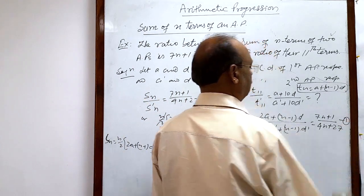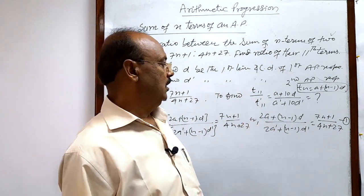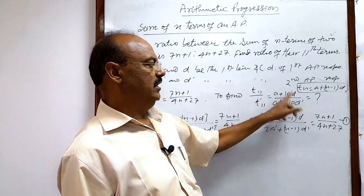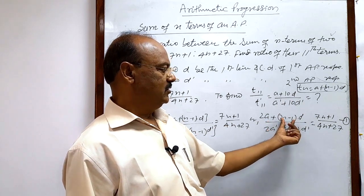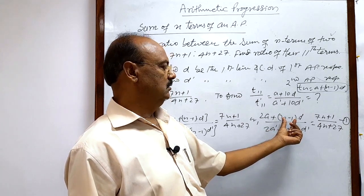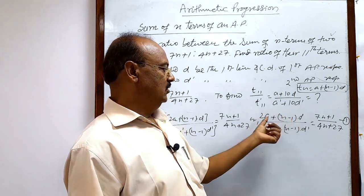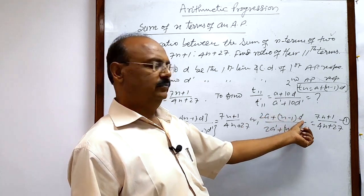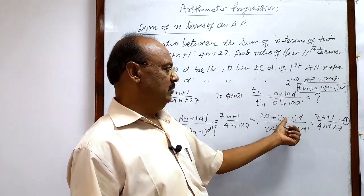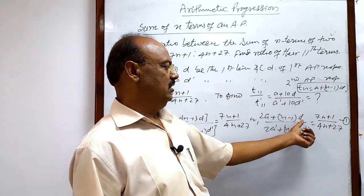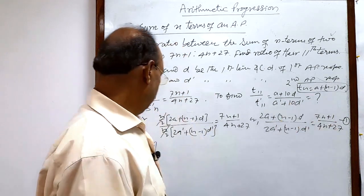Now, what we have to bring is a + 10d. We can get this from relation 1 if we put n − 1 = 20, i.e., n = 21, and then take 2 common from the numerator and denominator. After taking 2 common, we get a + 10d. So the trick is to put n = 21 in relation number 1.